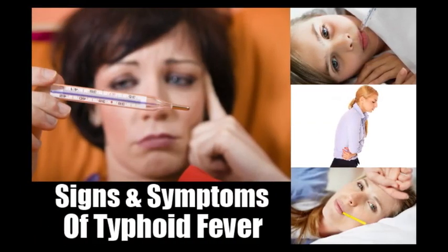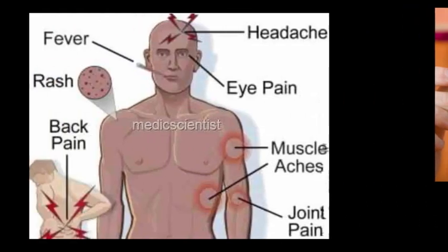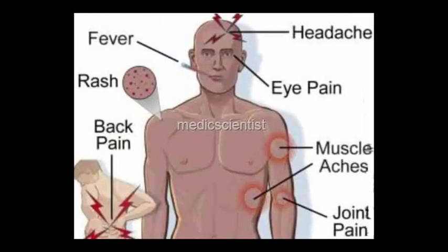Signs and symptoms of typhoid fever: persons with typhoid fever usually have a constant fever as high as 103-104 degrees Fahrenheit. They may also feel weakness, have stomach pains, headache, or loss of appetite. In some cases, patients have a rash of flat, rose-colored spots.